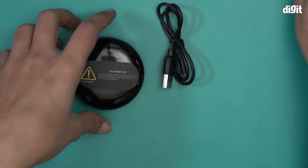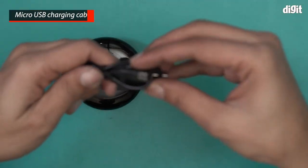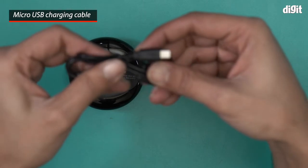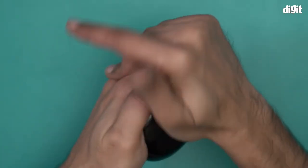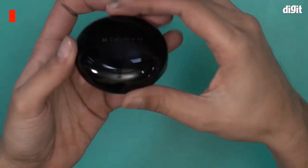This is the micro USB charging cable for this Wi-Fi remote. You can see the micro USB charging cable. This is what the Wi-Fi remote looks like. It has a shiny glossy black finish to it.